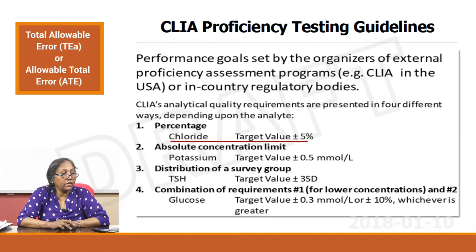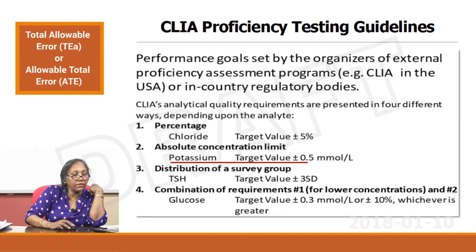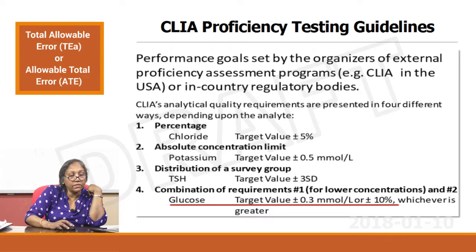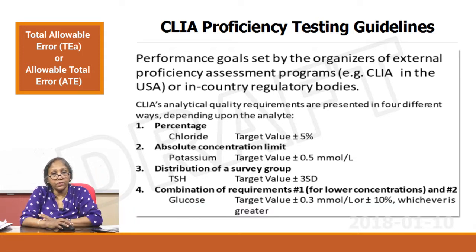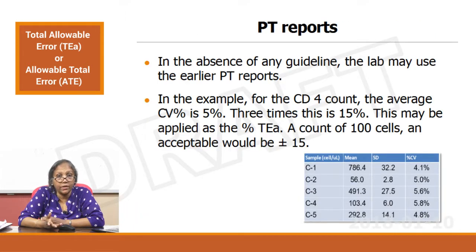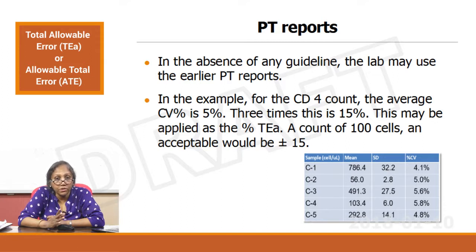For example, CLIA gives: chloride — target value plus or minus 5 percent; potassium — target value plus or minus 0.5 absolute concentration; TSH — target value plus or minus 3 SD; glucose — target value plus or minus 3 millimoles or plus or minus 10 percent, whichever is greater. If even CLIA does not give you guidelines, the next option is to go to your PT reports. Look at the average CV percent from earlier PT reports and use 3 times the CV percent as your TEa limit. For example, if CV percentages range from 4.1 to 5.8, take the average as 5 percent, making TEa 15 percent.